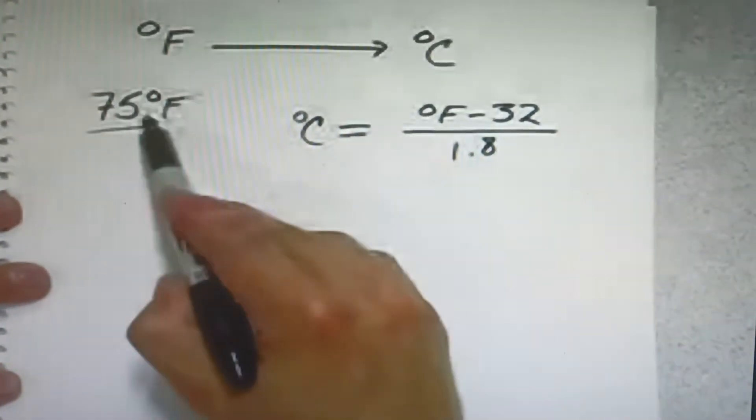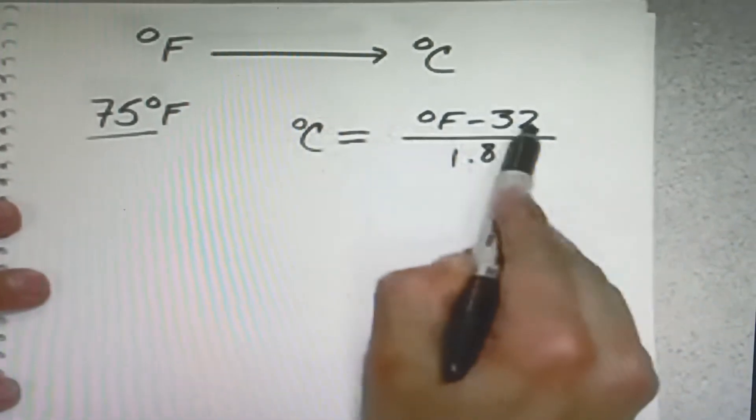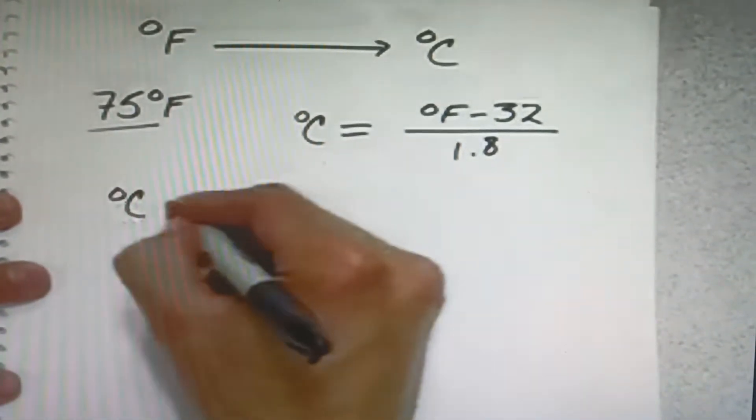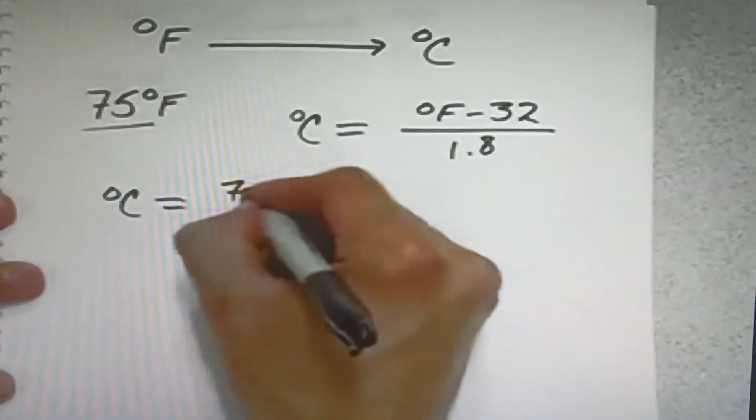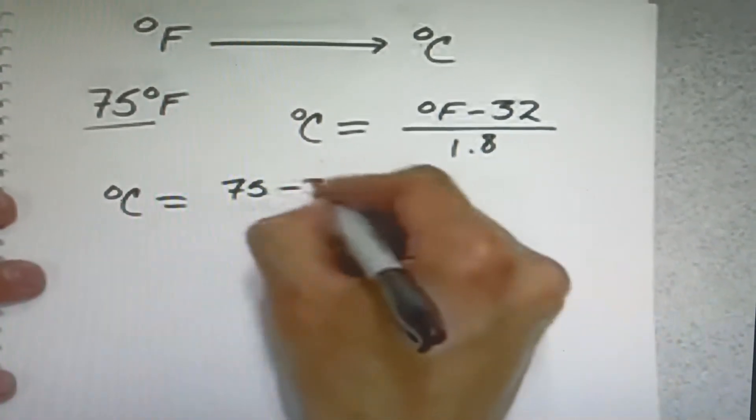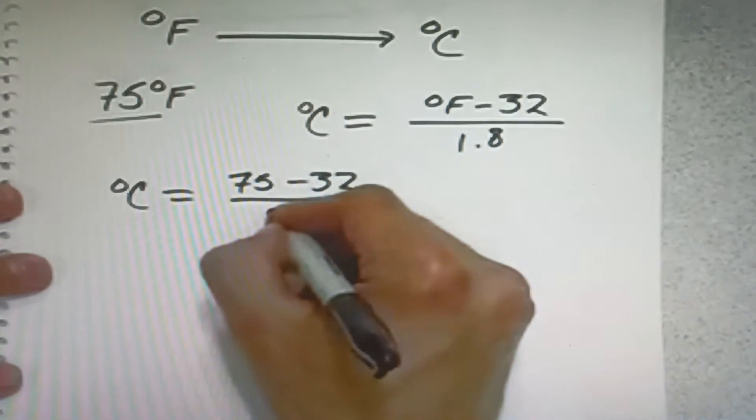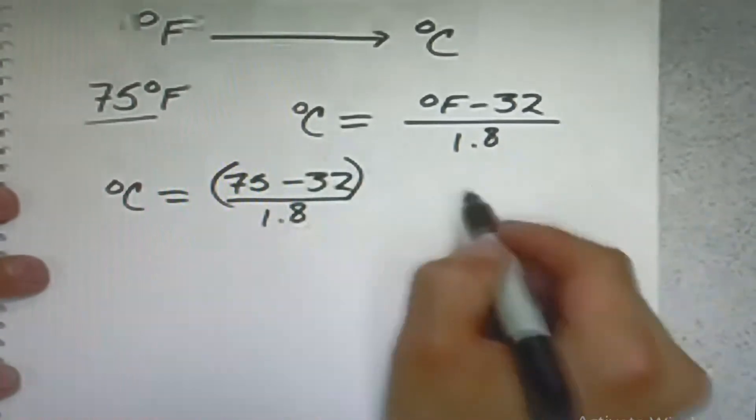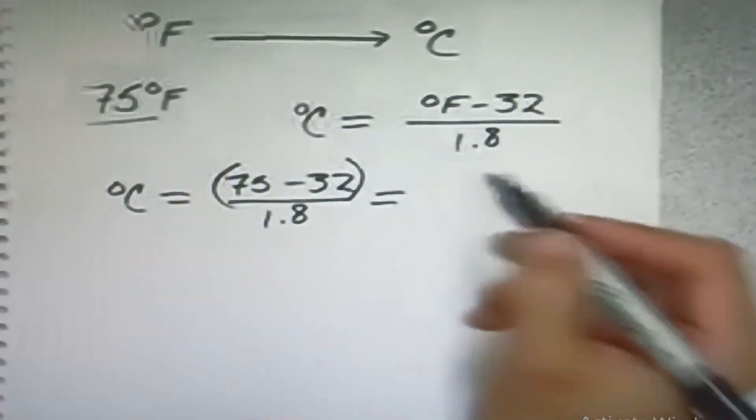So we simply plug in our degrees Fahrenheit into this equation and calculate it out. So degrees Celsius equals 75 minus 32 divided by 1.8. Now it's important that you do the top first before you divide by the bottom, otherwise you'll come up with the wrong answer.